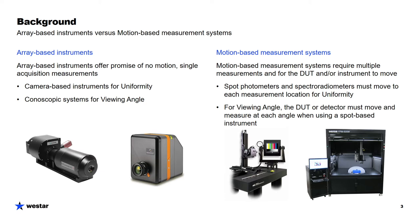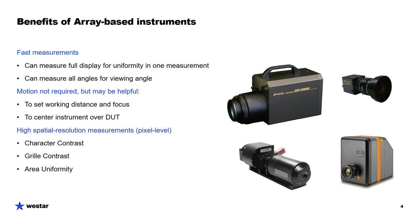The display can be tilted and turned for viewing angle or moved for uniformity measurements. The benefits of the array-based instruments is that they can provide fast measurements, so you can measure a full display for uniformity in one acquisition, and you can measure a full viewing cone — all viewing angles — in a single acquisition with one of the conoscopic instruments. Motion is not required with these, but it could still be helpful. These array-based instruments are also needed, especially the camera-based instruments, for some pixel-level high-resolution measurements — things like character contrast, grill contrast, and area uniformity.